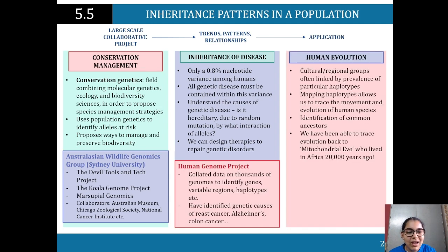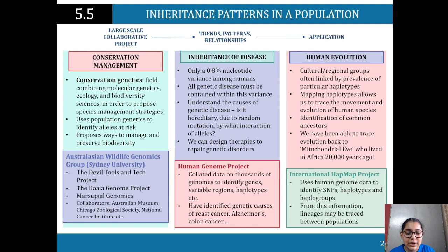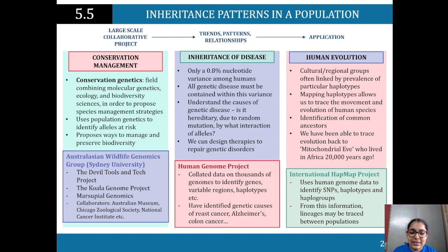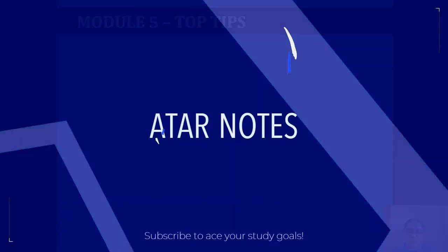We have been able to trace back to Mitochondrial Eve, who lived in Africa 200,000 years ago. The International HapMap Project uses genome data to identify SNPs, haplotypes, and haplogroups. From this information we are able to track lineages between populations.